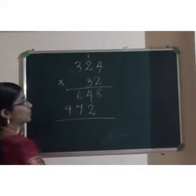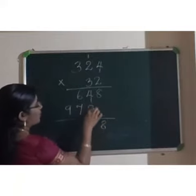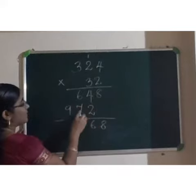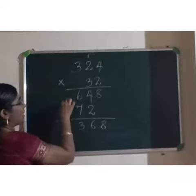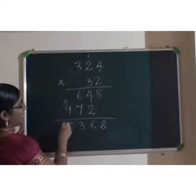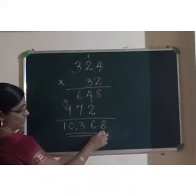And then, we have to add this. 4 plus 2 is 6. 6 plus 7 is 13. So, we have to write 3 here and carry over 1. 1 plus 9 is 10. So, our answer will be 10,368.